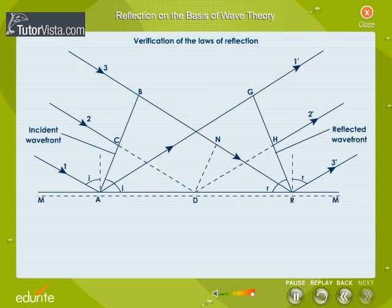Now, let's prove the first law of reflection. Since the incident wavefront AB, the reflecting surface MM and the reflected wavefront RG are all perpendicular to the plane of the paper, normals to them also lie in the same plane.